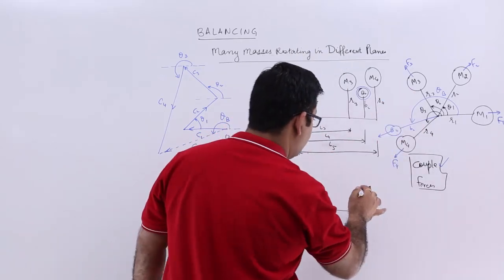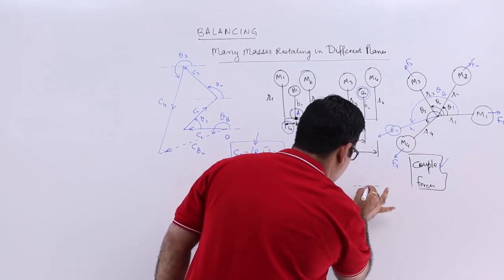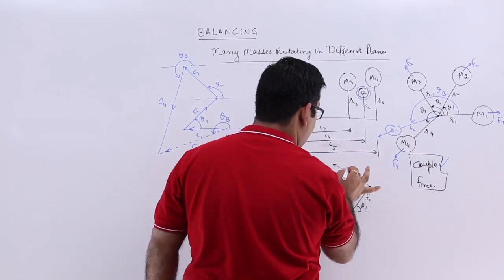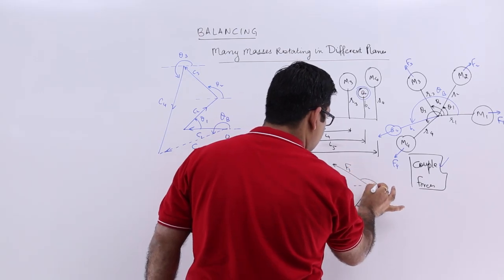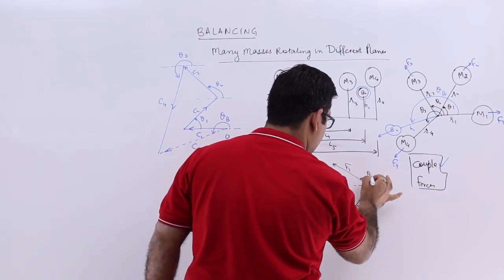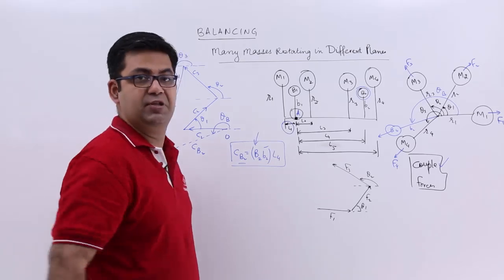Now you have your theta 3 at theta 2 angle. So this is theta F3. And this is theta 2. Everything is drawn to scale.